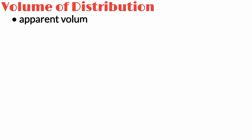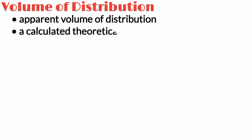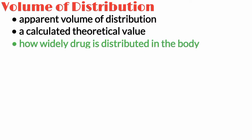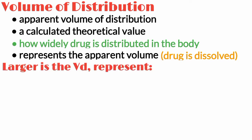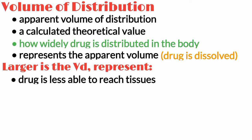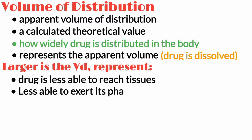The volume of distribution, also known as the apparent volume of distribution, is a calculated theoretical value. The volume of distribution specifies how widely the drug is distributed in the body. It represents the apparent volume into which the drug is dissolved. The larger the VD, the less the drug is able to reach the tissues it is expected to reach and exert its pharmacological effect.